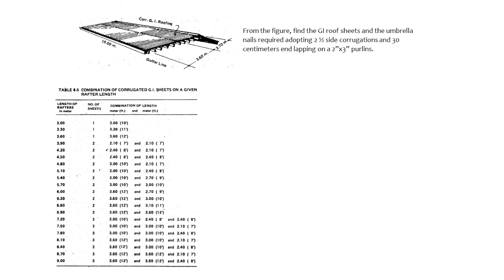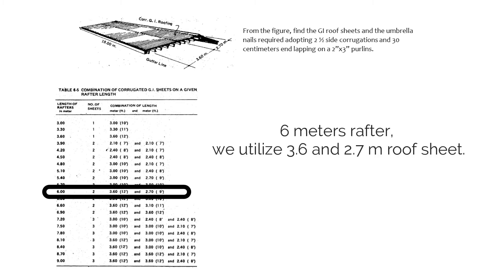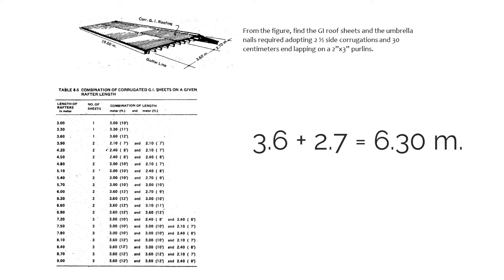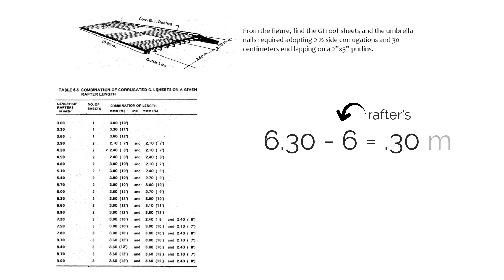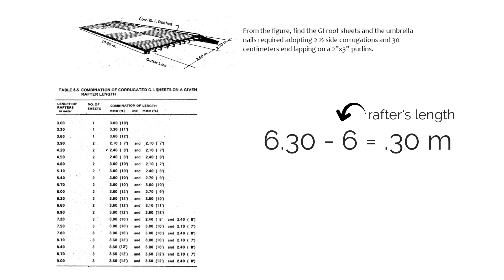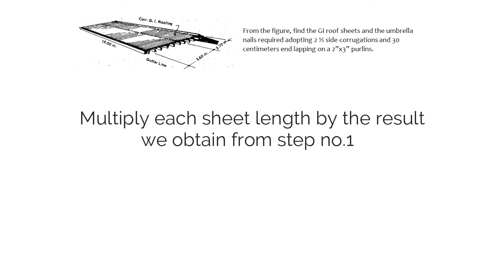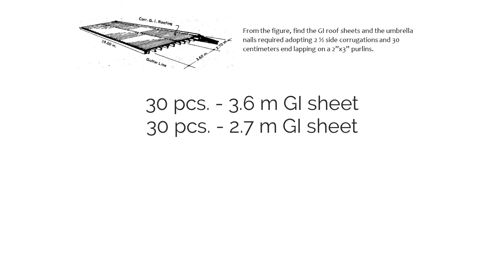Step two: measure the rafter length of 6 meters and find the right combination including the 30-centimeter end lapping. For a 6-meter rafter, we utilize 3.6 and 2.7 meters roof sheets. Combining 3.6 and 2.7 gives 6.3 meters — the excess 30 centimeters is intended for the end lapping of the roof sheets. Multiplying each sheet length by 30, we have 30 pieces of 3.6 meters and 30 pieces of 2.7 meters corrugated roof sheets.